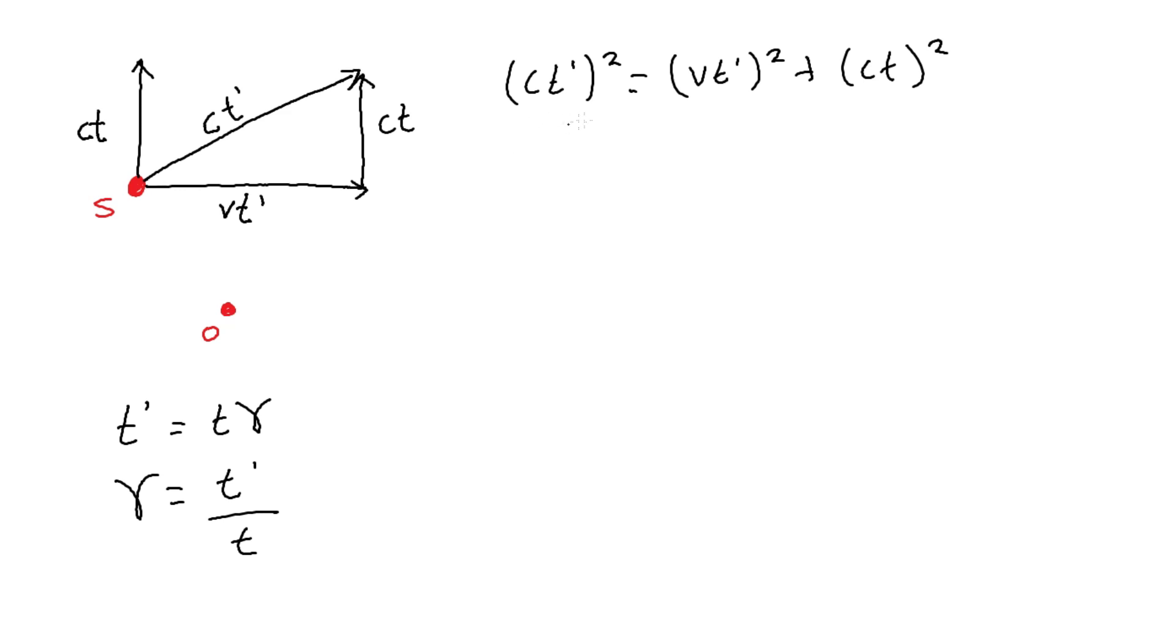And if we rearrange this to write it in terms of C, T squared, and distribute the power, we get C squared T squared is equal to C squared T prime squared minus V squared T prime squared.